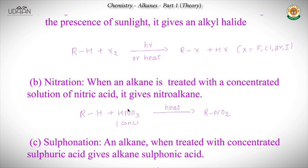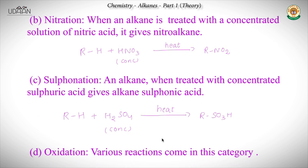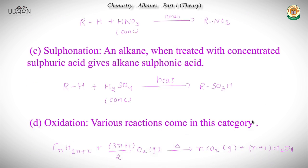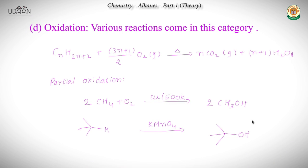In nitration, an alkane is treated with concentrated nitric acid solution and heated to a high temperature to get a nitroalkane - heating is very important here. In sulfonation, it's similar to nitration, but you treat it with concentrated H₂SO₄ acid with heat, and you get alkane sulfonic acid.